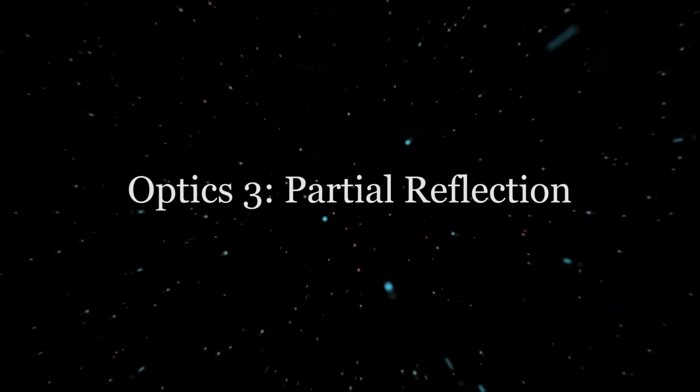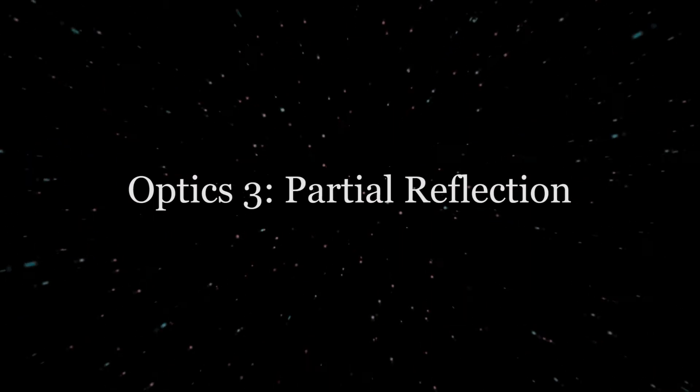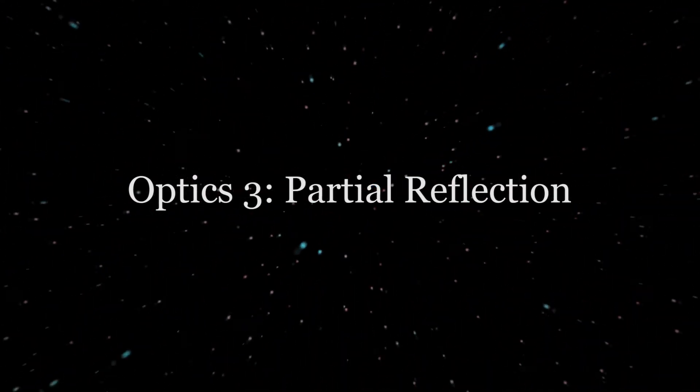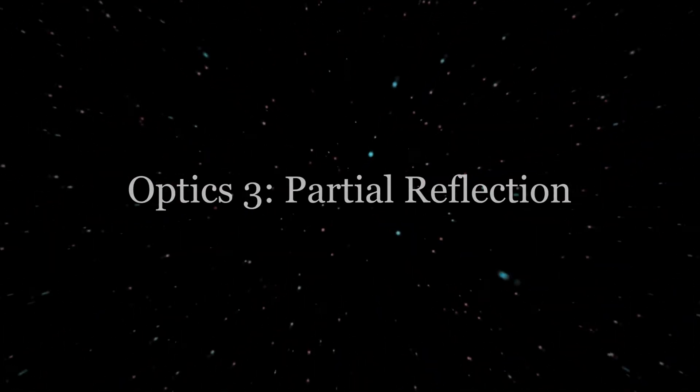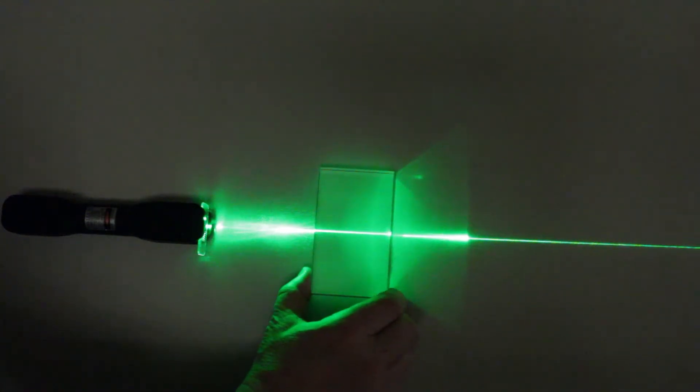This is our third video on optics and will involve both the reflection and refraction of light. When light from a substance with a certain index of refraction encounters another substance with a different index of refraction, both reflection and refraction of light typically occur, a situation we will refer to as partial reflection, but it could also be called partial refraction.